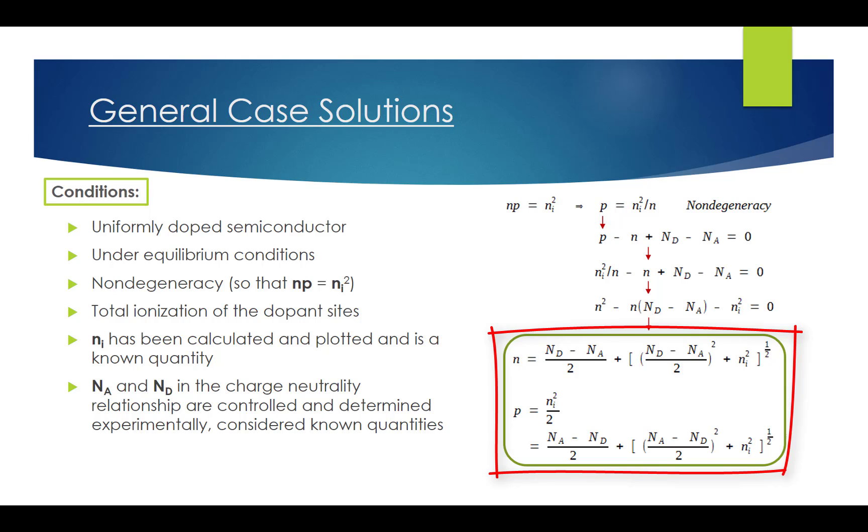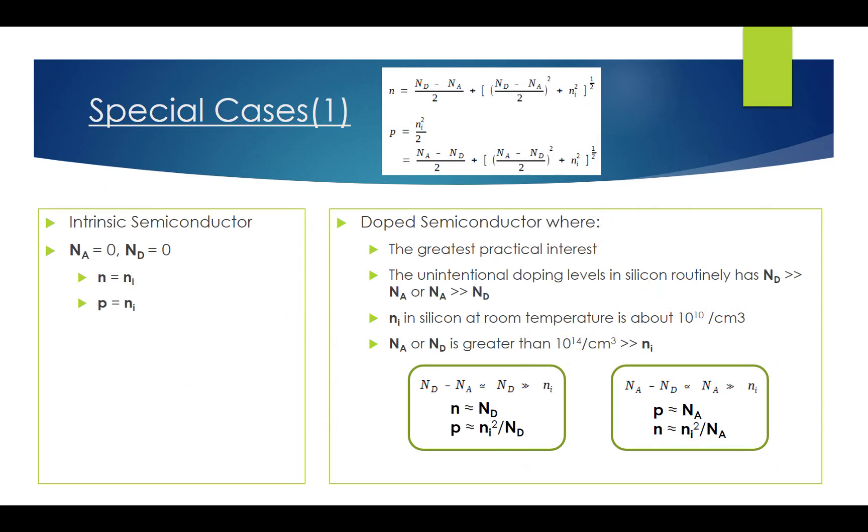Now we will study four special cases that are of more practical interest. The first special case is an intrinsic semiconductor. In an intrinsic semiconductor, there is no doping, so Na and Nd are zero. And the general case expression for n and p will be reduced. We can then get n equals ni and p equals ni. This is of course the expected result for the equilibrium carrier concentrations in an intrinsic semiconductor.